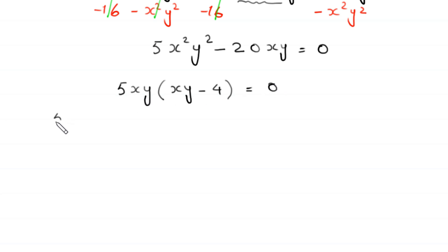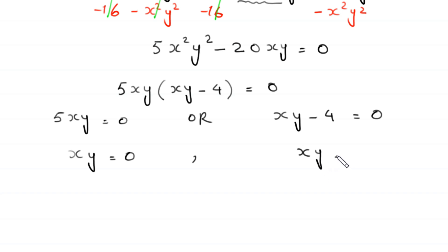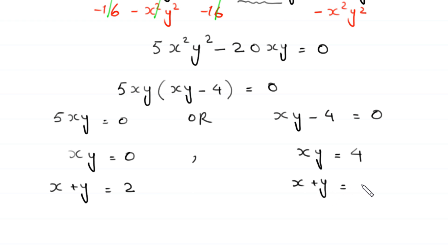From 5xy(xy minus 4) equals 0, either 5xy equals 0, giving xy equals 0, or xy minus 4 equals 0, giving xy equals 4. Combined with equation 1, x plus y equals 2, we now have two systems to solve.